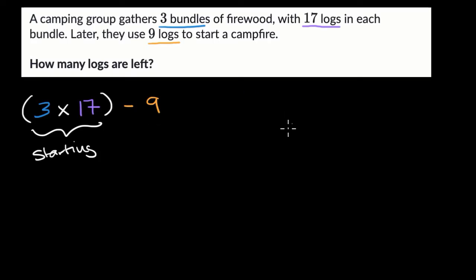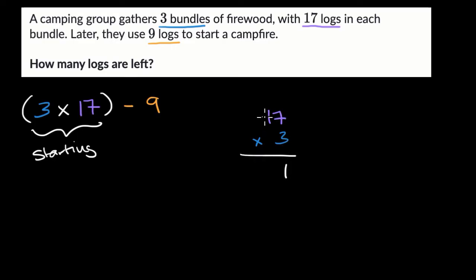First, let's do 17 times three over here on the side. In the ones place, seven times three is 21. We'll regroup those two tens of the 21 into the tens place. And then one times three is three — it's actually 30, because we're talking about three tens — and then we have these two more tens.